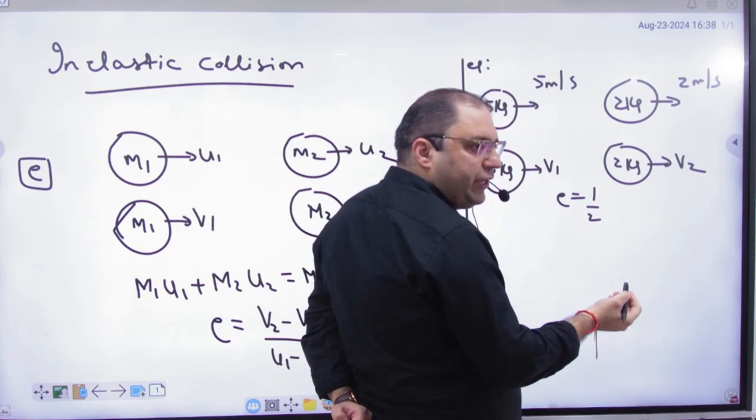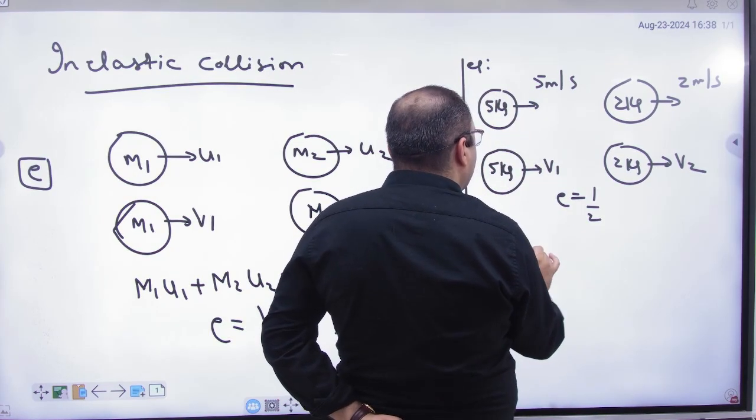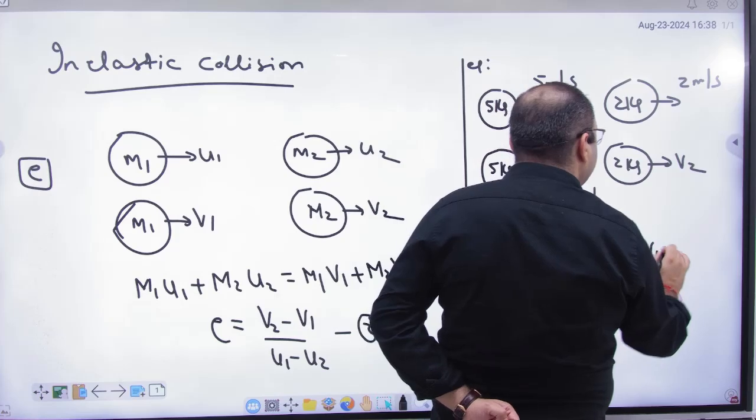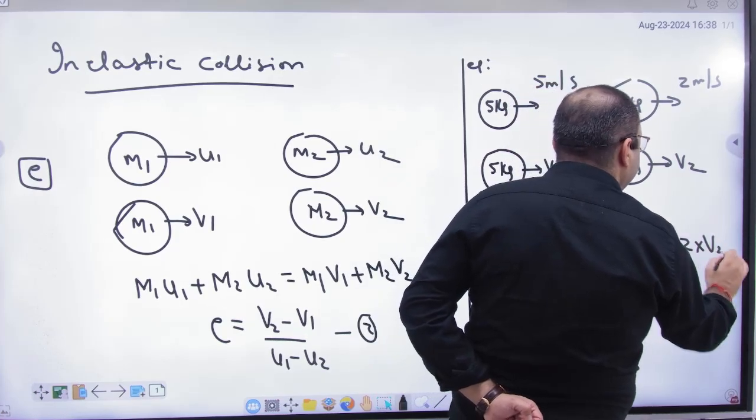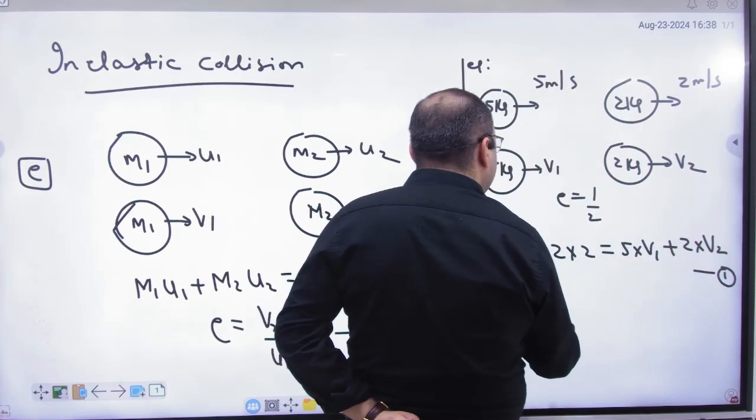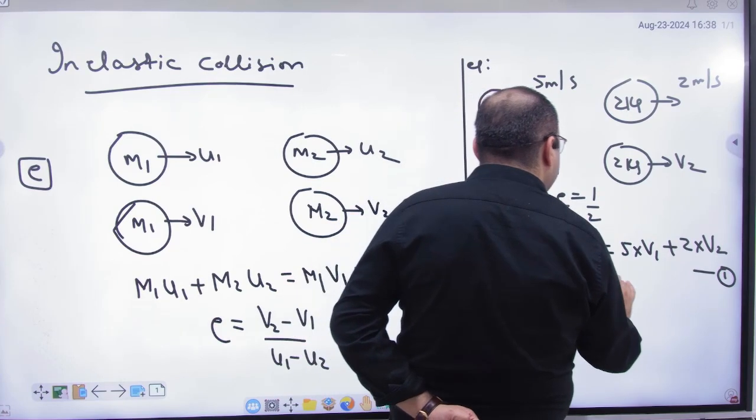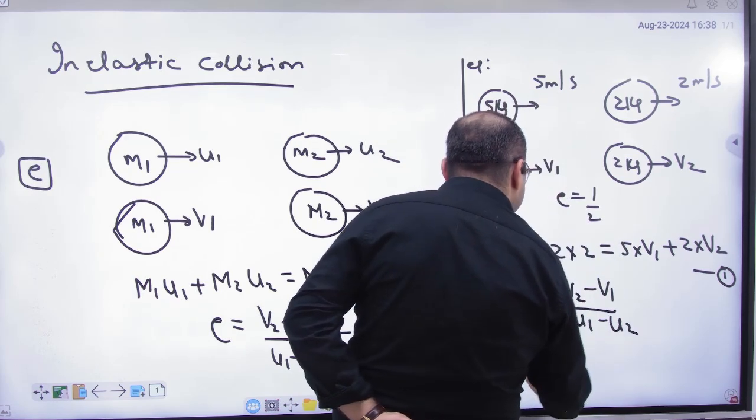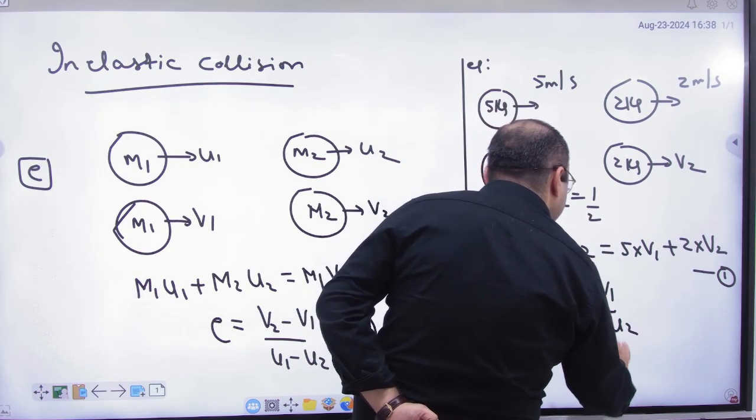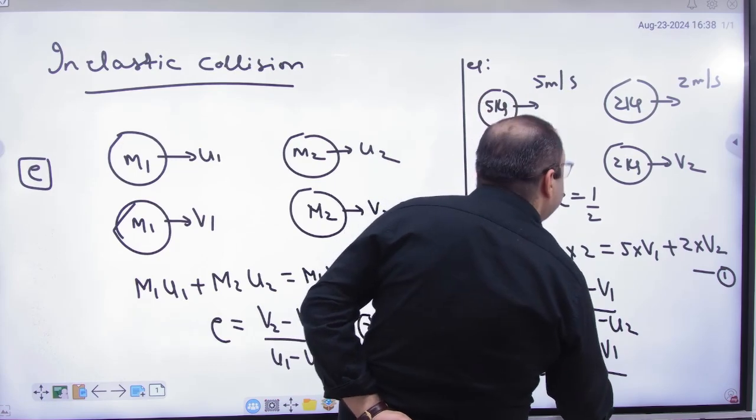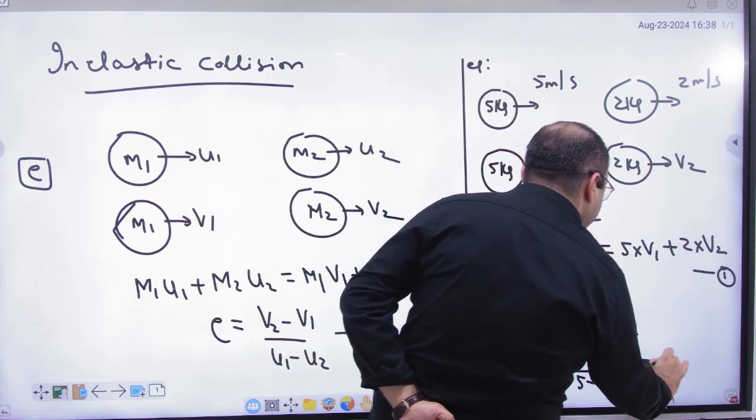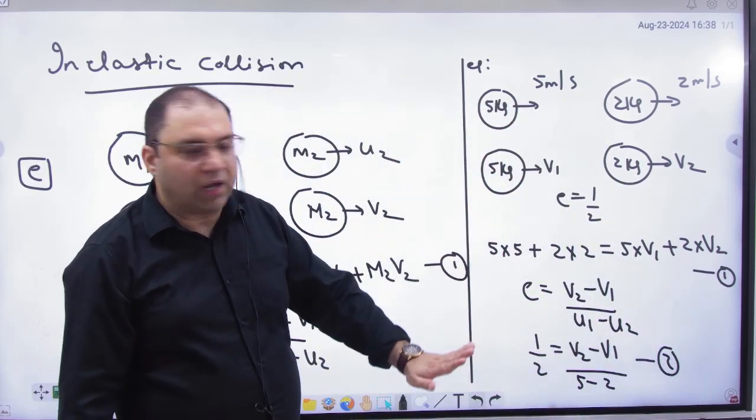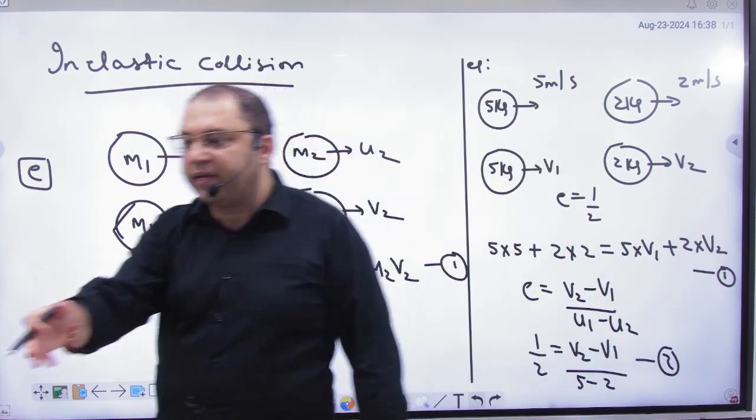First concept is momentum conservation. Before collision, momentum will be this. And second, apply the restitution equation. So in the restitution equation, e is half equals V2 minus V1 divided by U1 minus U2, meaning 5 minus 2. This is equation number 2. By solving these two, calculate V1 and V2. No shortcut, have to solve simultaneously.